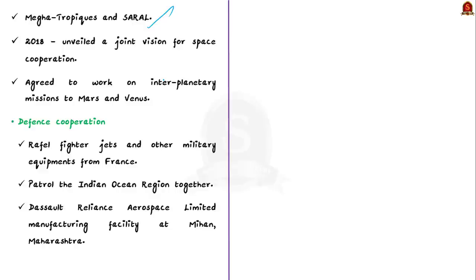Back in 2018, India and France unveiled a joint vision for space cooperation, and the two nations also agreed to work on interplanetary missions to Mars and Venus. That is all about space cooperation.